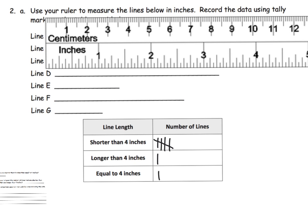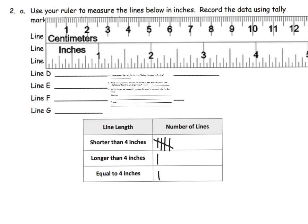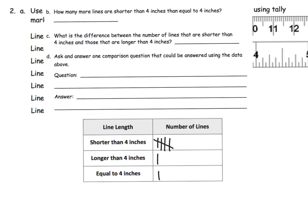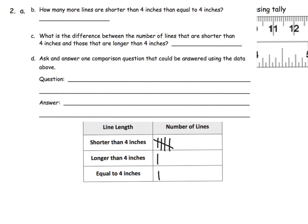And now once we've got this we can answer a series of questions. So how many more lines are shorter than four inches than compared to equal to four inches? Well we have five that are shorter, we have one that is equal, so the answer is there's four more lines that are shorter than four compared to equal to four.